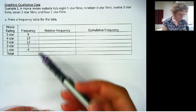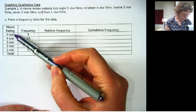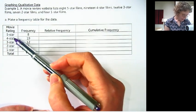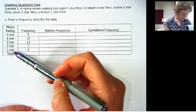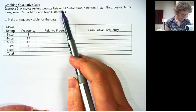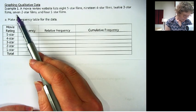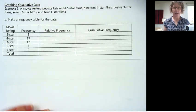And so here's a frequency table. We've got the categories. This is qualitative or categorical. So we have the categories listed here, and then the number of each. And these should match. So 8, 19, 12, 7, and 4. Okay, so it matches.